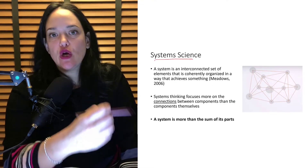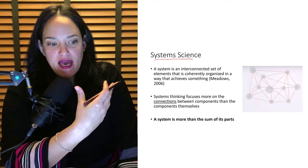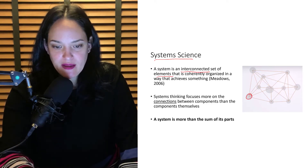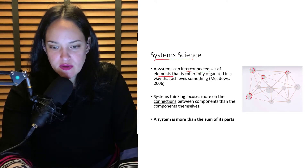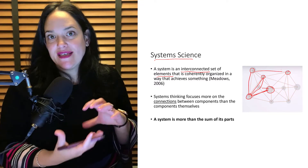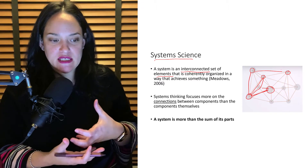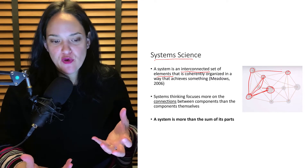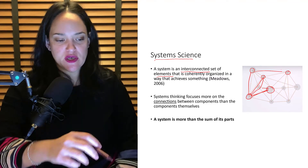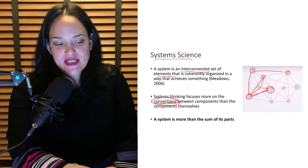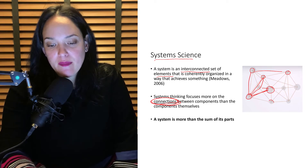So system science looks beyond reductionist thinking. A system is defined as an interconnected set of elements that is coherently organized — it self-organizes in a particular way — that leads to something bigger overall, or something that emerges from there. We'll talk about emergence in a while. Systems thinking focuses more on the connections between components than on the components themselves.